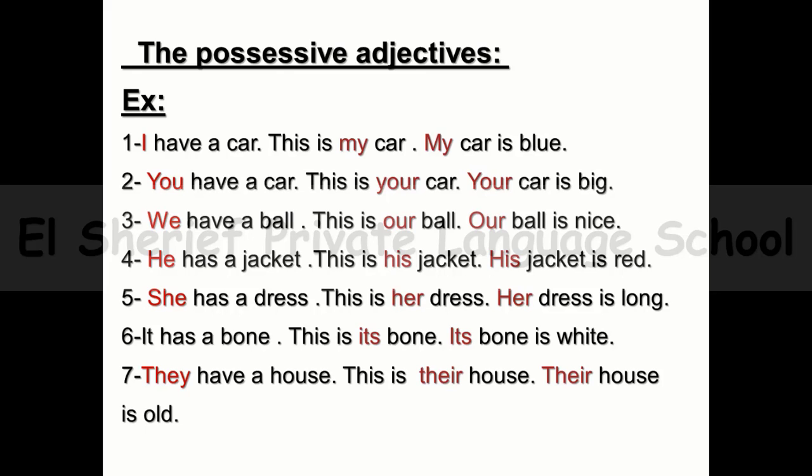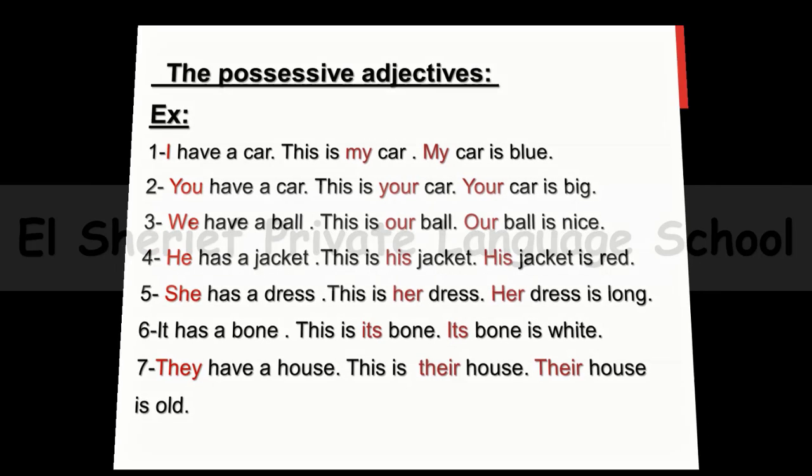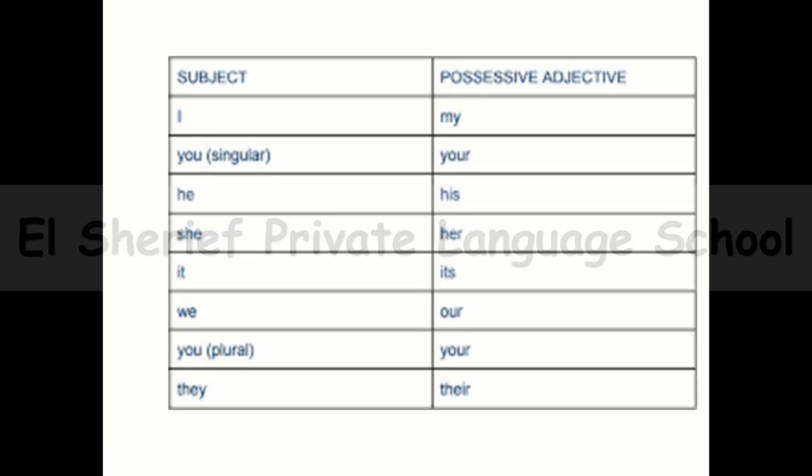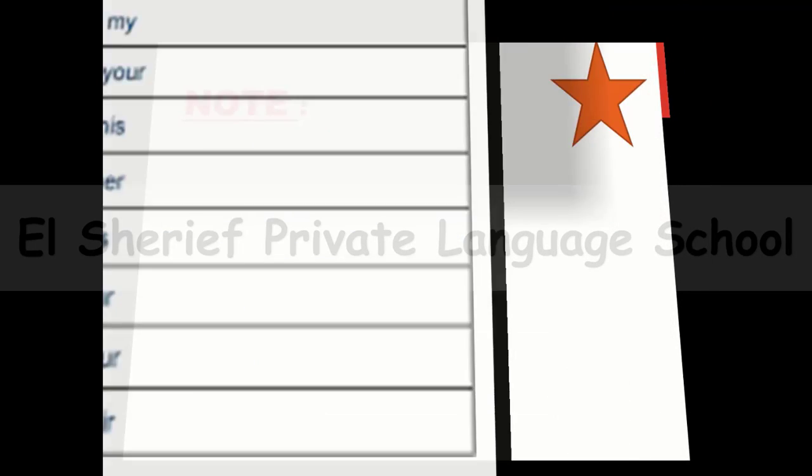You can put the possessive adjective at the beginning of the sentence, but don't forget to put it before the noun. To summarize: I→my, You→your, He→his, She→her, It→its, We→our, You (plural)→your, They→their.